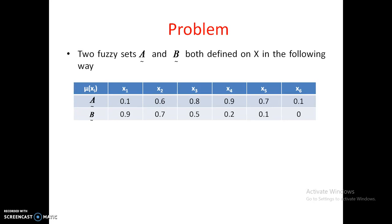μ_A(x) = 0.1/x1 + 0.6/x2 + 0.8/x3 + 0.9/x4 + 0.7/x5 + 0.1/x6. And μ_B(x) = 0.9/x1 + 0.7/x2 + 0.5/x3 + 0.2/x4 + 0.1/x5 + 0.1/x6. So these are the representations of the two fuzzy sets A and B.